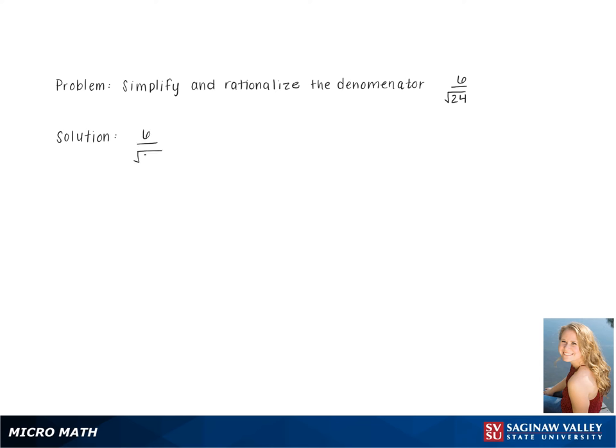To simplify the problem 6 over the square root of 24, we start by leaving the 6 on top and breaking down the square root.